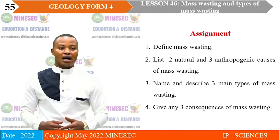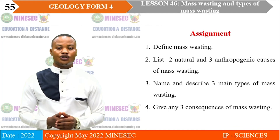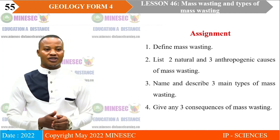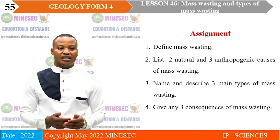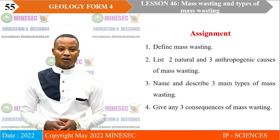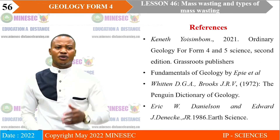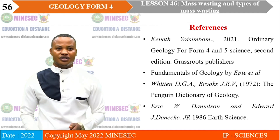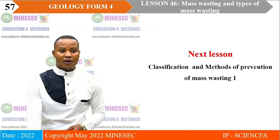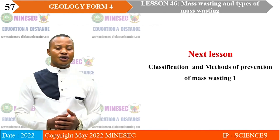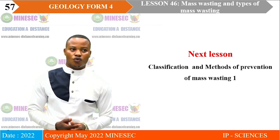For your assignment: define mass wasting; list two natural and two anthropogenic causes of mass wasting; name and describe three main types of mass wasting; give any three consequences of mass wasting. To further understand the lesson, you can read the listed references. With this, we have come to an end of lesson 46. Our next lesson shall be on Classification and Methods of Prevention of Mass Wasting.